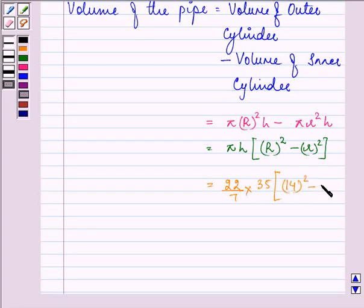14 the whole squared minus 12 the whole squared. That is further equal to 22 by 7 into 35 into 196 minus 144.